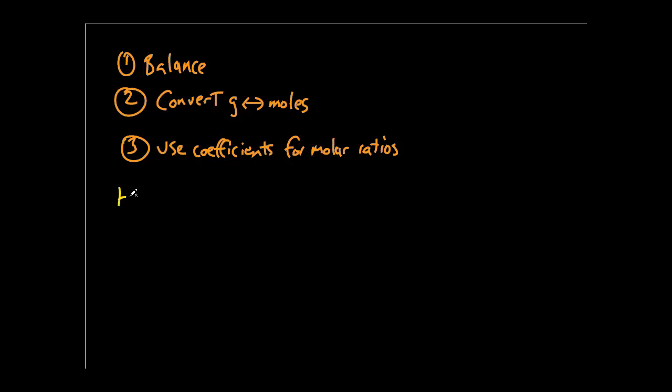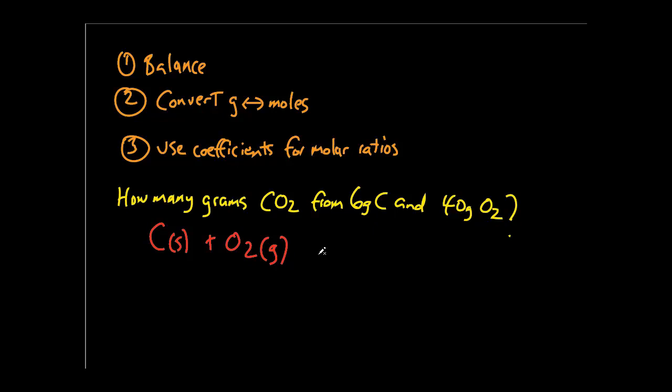As an example, let's say we had how many grams of CO2 are formed from 6 grams of carbon and 40 grams of oxygen. And an equation was set up like this: carbon plus O2 yields CO2. First thing, check to see the equation's balanced. Well, it is.